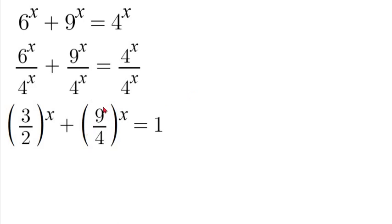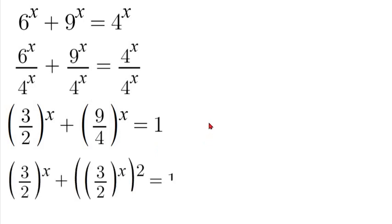Now 9 over 4 is interesting because both 9 and 4 are perfect squares. So we can write this as 3 over 2 squared. What we did here is we took that 3 over 2 squared and pulled that 2 value to the outside. The reason we did that is now we have 3 over 2 to the power of x in both positions.